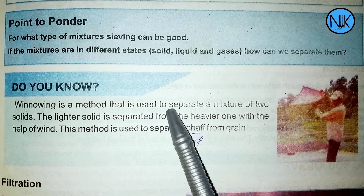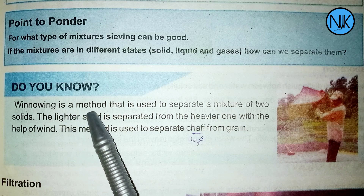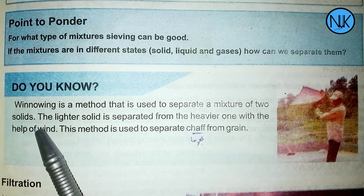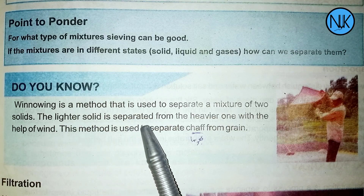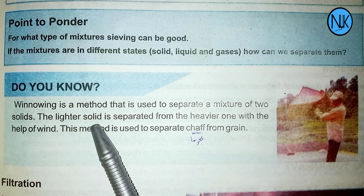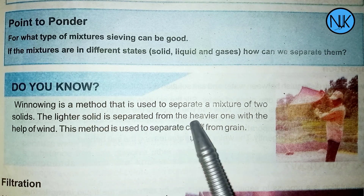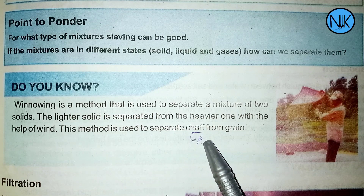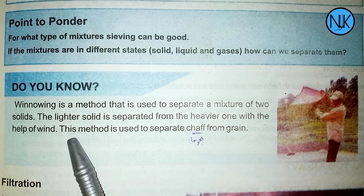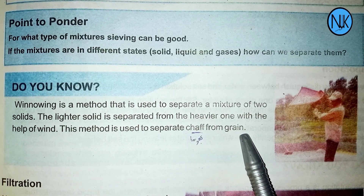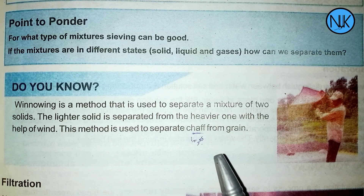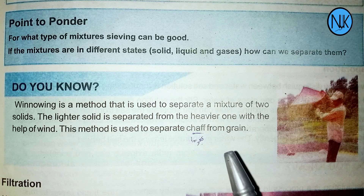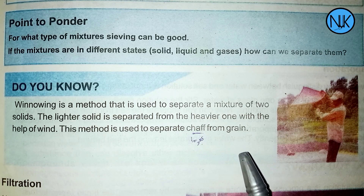Winnowing is a method that is used to separate a mixture of two solids. The light solid is separated from the heavier one. This method is used to separate the grain from the chaff.